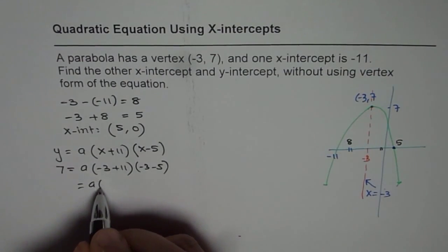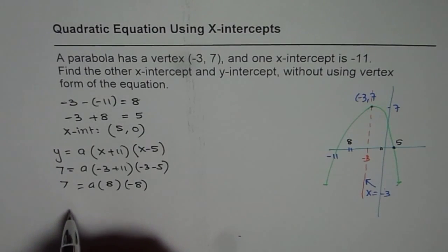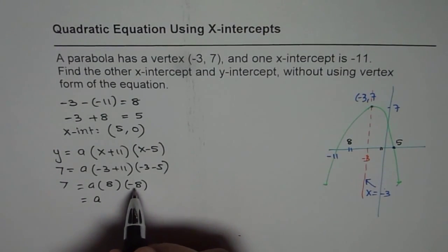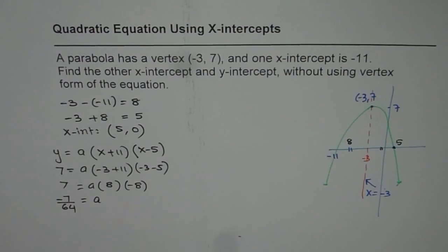So a times this is 8 positive, 8 negative is equal to 7, or a is equal to 8 times 8 is 64, so we get -7 over 64.